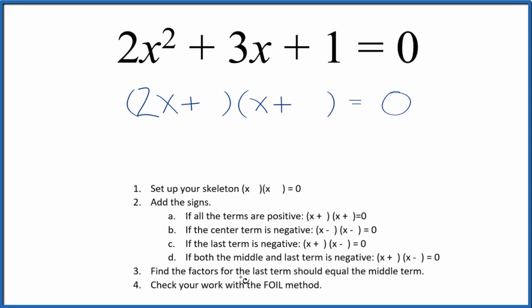Then normally what we'll do is we'll find the factors of that last term, the 1, and they add up to the middle term. But since we have the 2, it's not going to work quite that way. But this one's pretty simple if we just have 1. So all we can really put in is 1 times 1.